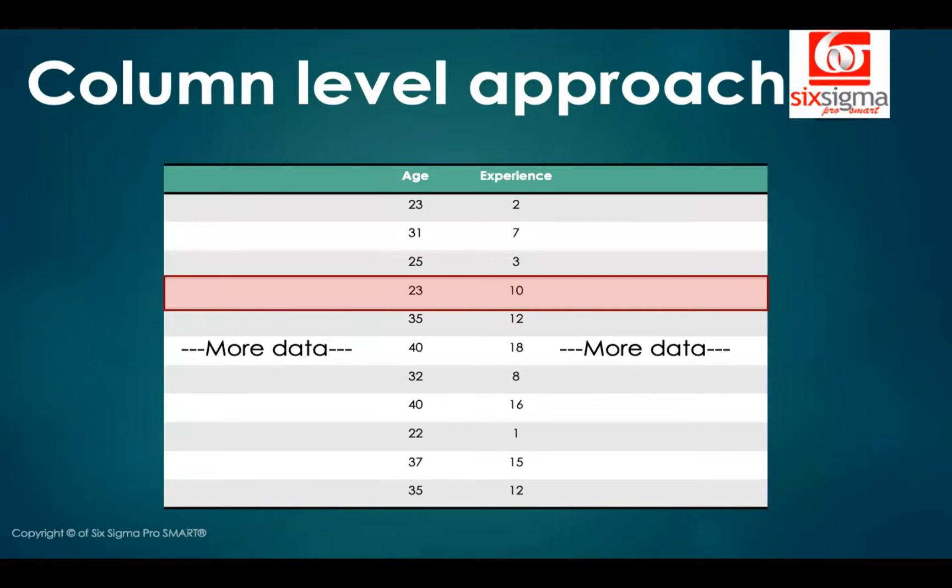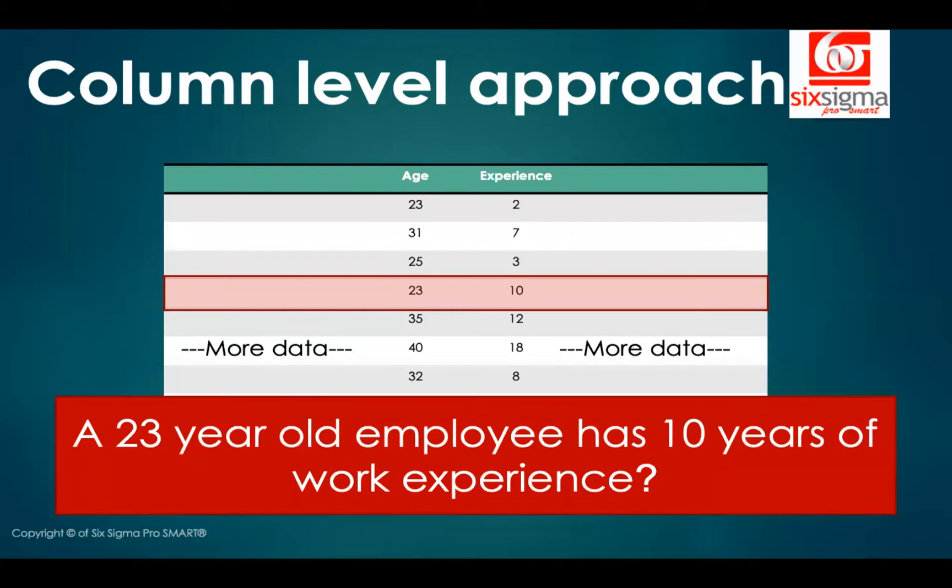This is what we do when we look at the column alone. So we came back and replace the missing value with the median. Very convenient, very easy. But there is a problem. And the problem is that we are saying that a 23 year old employee has 10 years of work experience, which means the employee started working at the age of 13. The debate here would not be whether it is practically possible or not that an employee can start working at the age of 13. The problem is that in our decision making, we only considered the experience column. We didn't look at the age column at all. Had there been a way to consider the entirety of the record, which is the row, we could have come up with a better imputation.